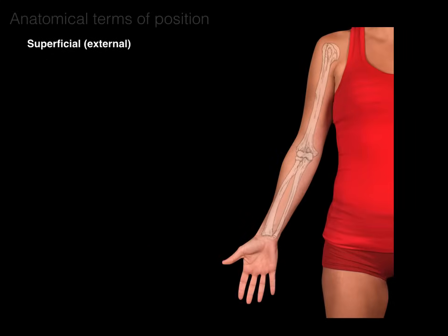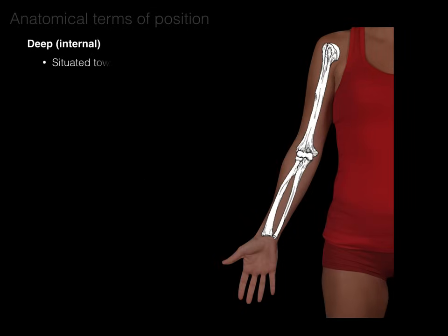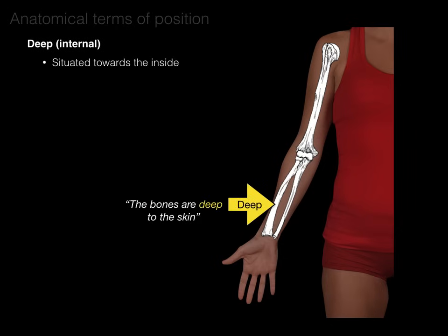Superficial, or external, means situated on the surface. For example, the skin is superficial to the bones — it doesn't matter which part of the skin; it's always superficial to the bones. Deep and internal means situated towards the inside. For example, the bones are deep to the skin — it doesn't matter which side of the bone; the bones are always deep to the skin.